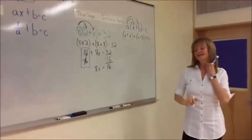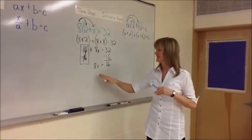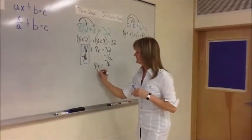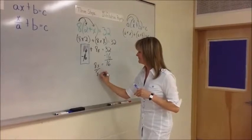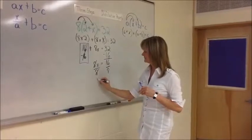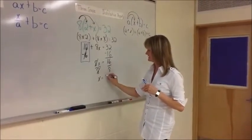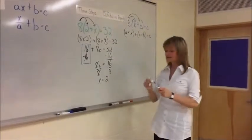So now you're back to that two-step process where this is straight multiplication, and now you have to do the opposite. Divide by eight, divide by eight. This zeroes this out. X equals 16 divided by eight is two. And that is your answer.